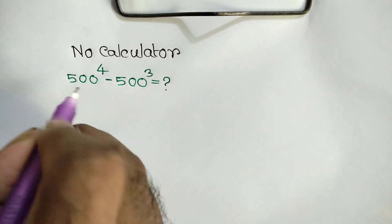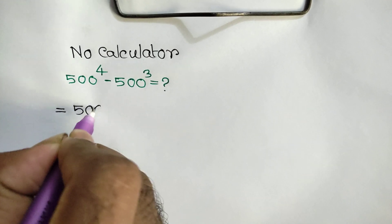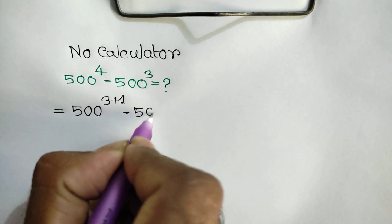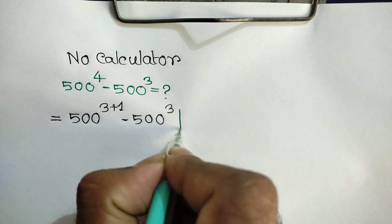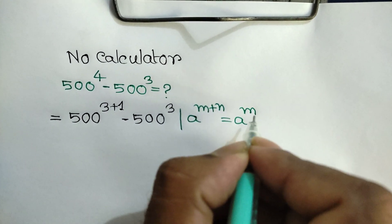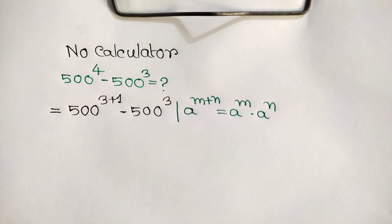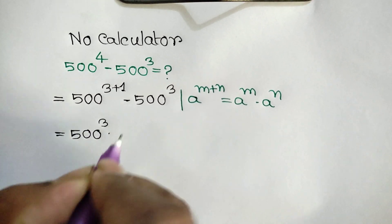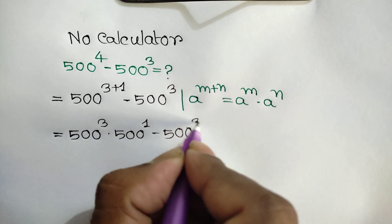500 to the power 4 can be written as 500 to the power 3 plus 1, minus 500 to the power 3. Now we know that a to the power m plus n is equal to a to the power m times a to the power n. Applying this rule, we can write 500 to the power 3 times 500 to the power 1, minus 500 to the power 3.